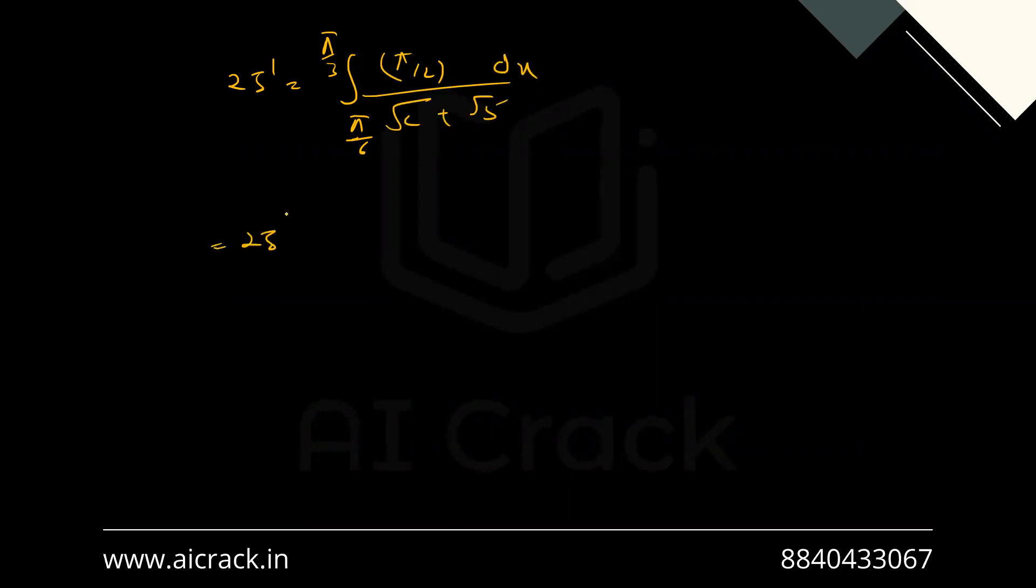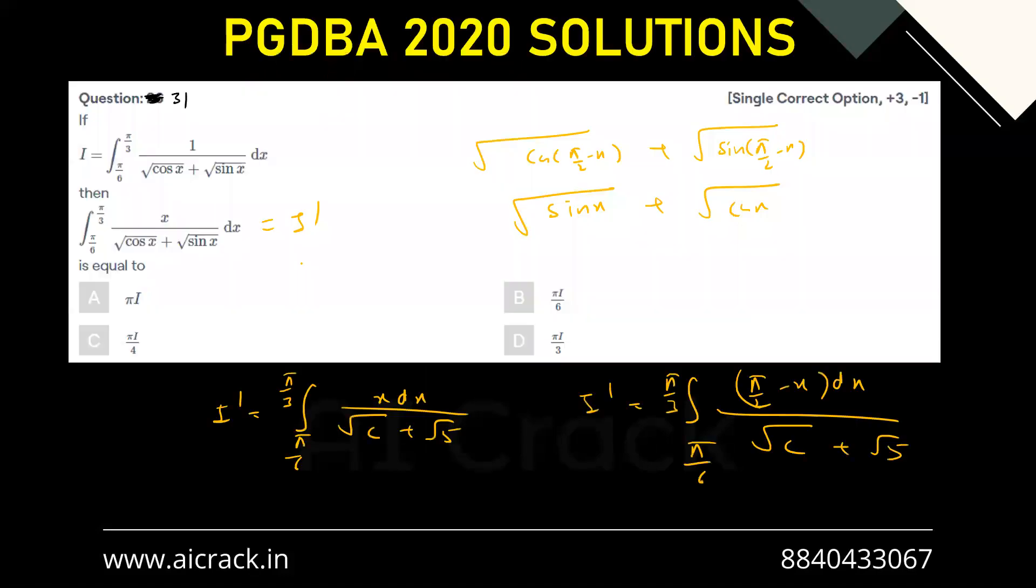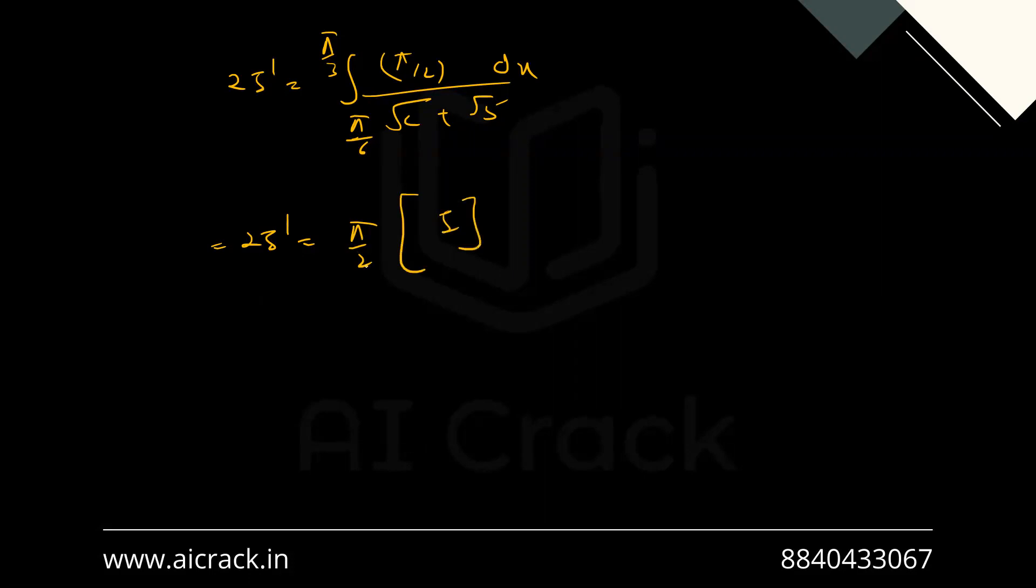This would become 2i dash equals pi by 2 times i. This is given as pi by 2 i. So i dash would become pi i by 4. And this would be pretty good.